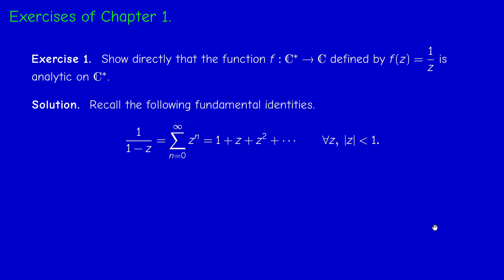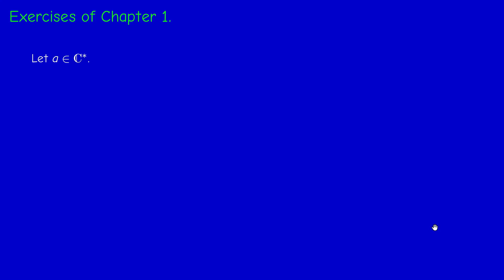And since we can differentiate term by term inside the disk of convergence, then we get a power series expansion of 1 over 1 minus z squared.